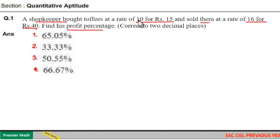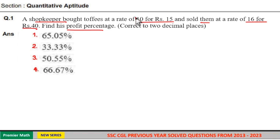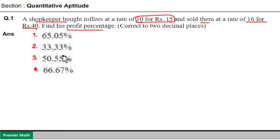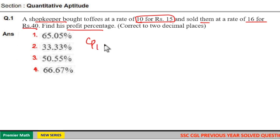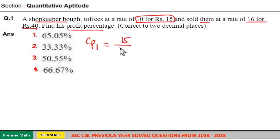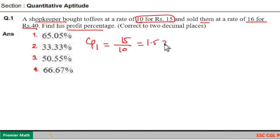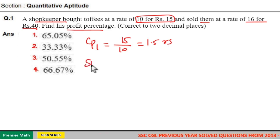He bought 10 toffees at rupees 15, so the cost price of 1 toffee is equal to 15 divided by 10, that is 1.5 rupees. Now the sell price of 1 toffee is equal to...